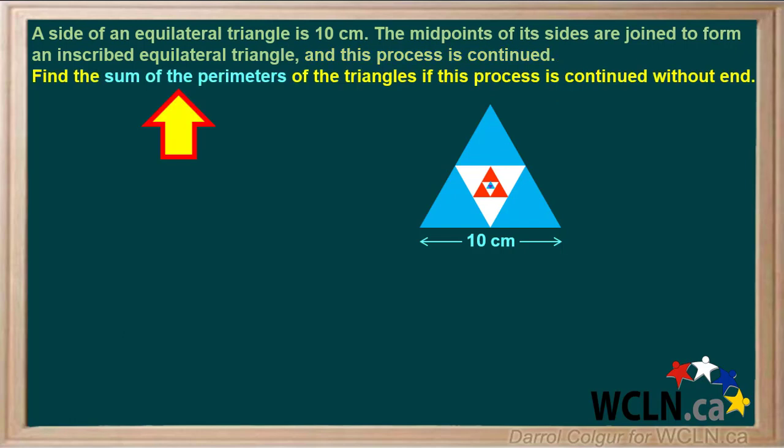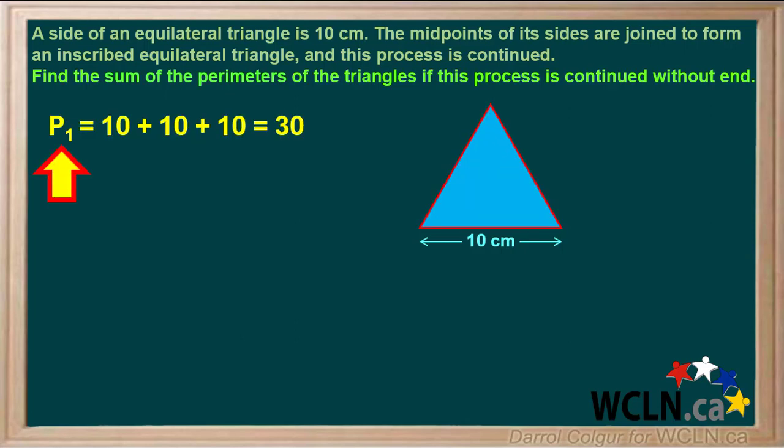We're asked to find the sum of the perimeters of the triangles if this process is continued without end. The perimeter of the largest triangle, or the first one, we'll call P1, and it's 10 plus 10 plus 10, or 30.